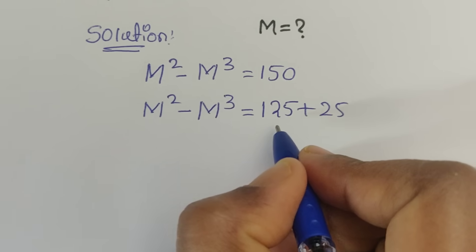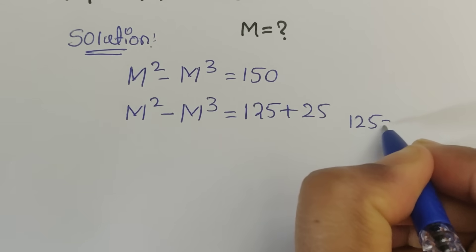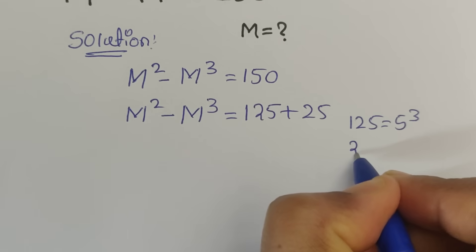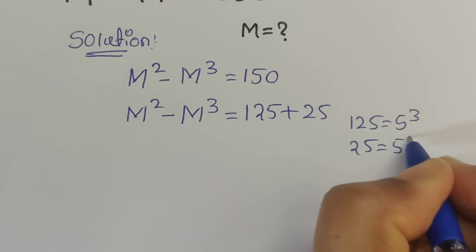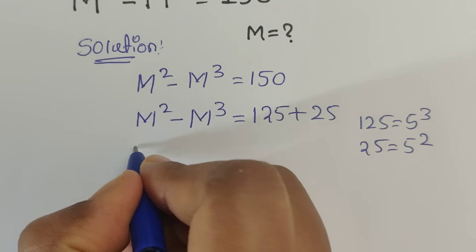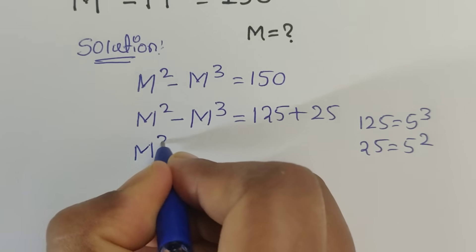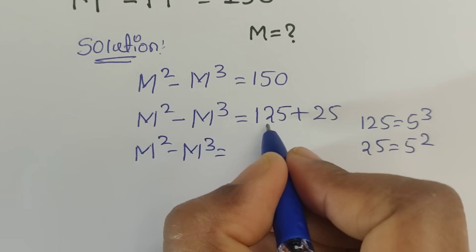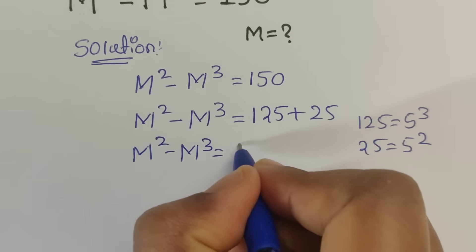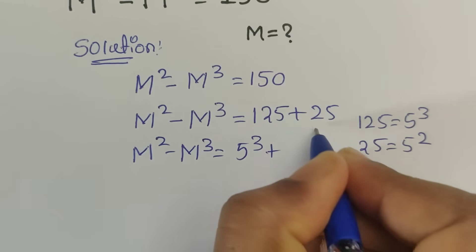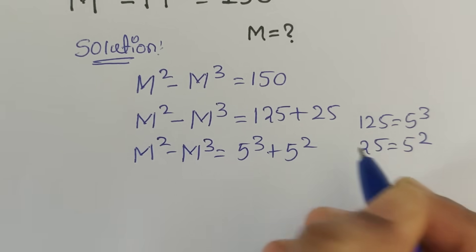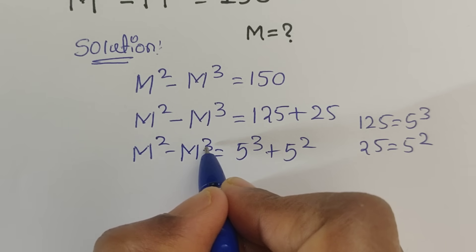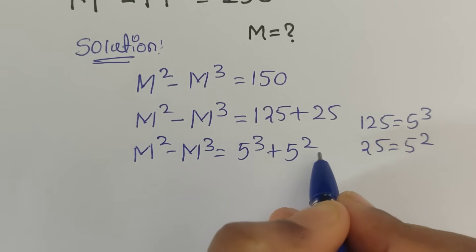So again we can write 125 equal to 5 cubed, and 25 equal to 5 squared. So m squared minus m cubed equals 5 cubed plus 5 squared. See here we got cube power — power 3 and power 2.